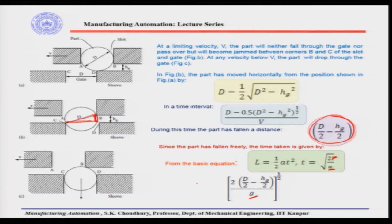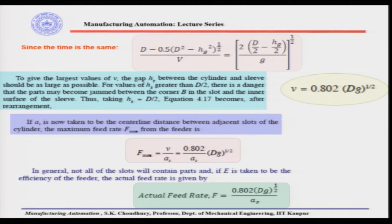In our case the acceleration is due to gravity. The time taken for the part to fall vertically is given by this equation, and this is the same time in which the part has moved horizontally from this position to this position. Since both times are equal, we equalize them and find that the critical velocity at which the part will fall through the gate equals 0.802 times √(dg), where d is the gate or part diameter, g is gravity, and hg should be as large as possible to give the largest velocity value.